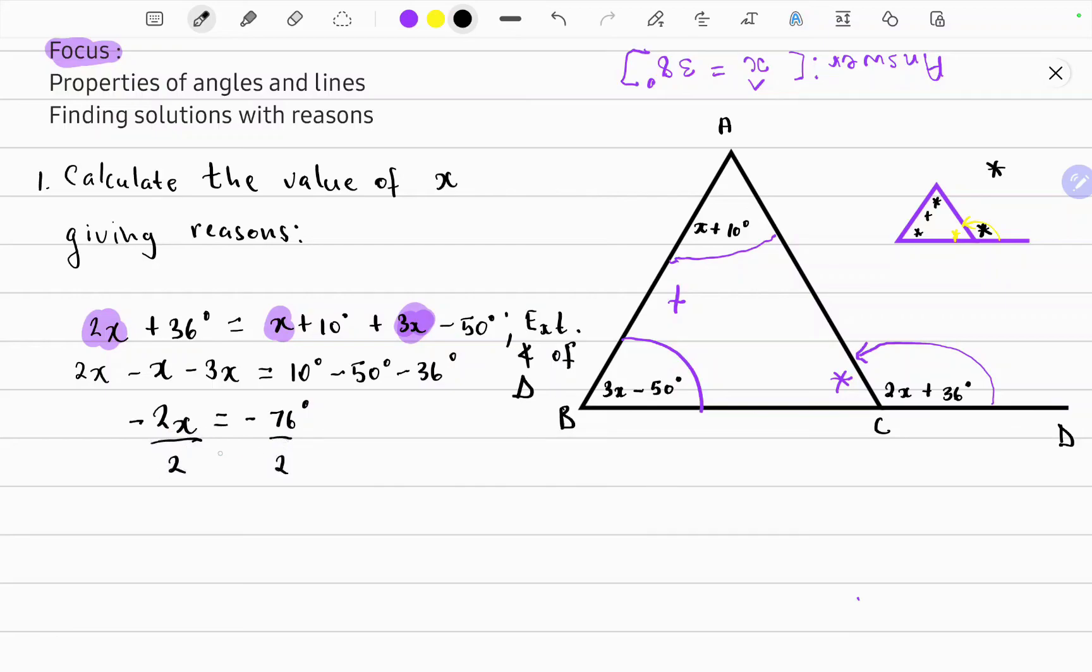Divide both sides by negative 2 to isolate the x. So x should be equal to 38 degrees. Thanks for watching.